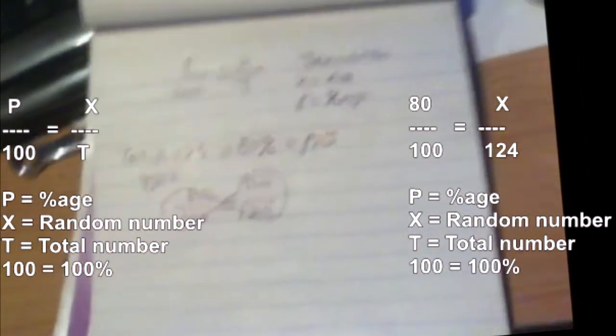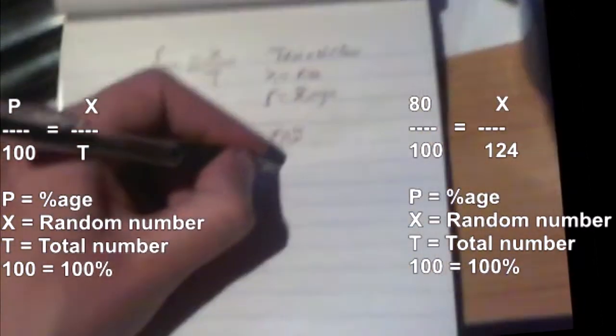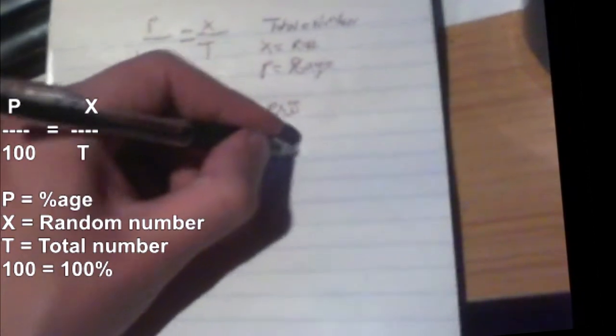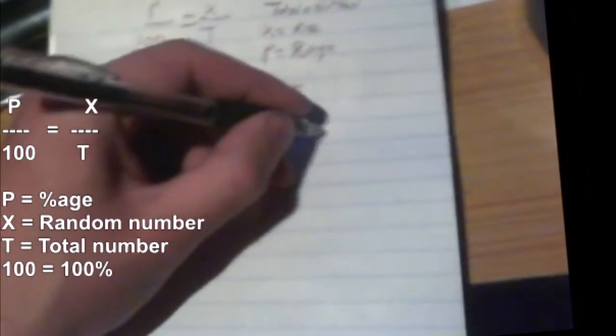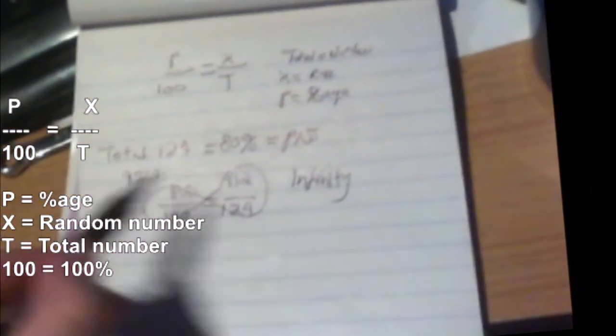That gives you 99.2. And you have the infinity symbol. That's why it's called the infinity rule. Because no matter which way you go, where you start from, how you go, it's always going to equal the opposite, the last number.